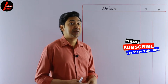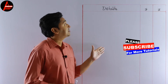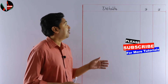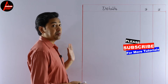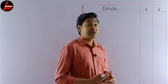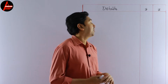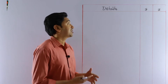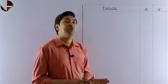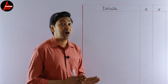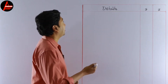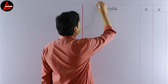We will include all the expenses and incomes of the partnership business. This is a vertical format to prepare the Profit and Loss Appropriation Account. In a horizontal format, you write all expenses on the debit side and all incomes on the credit side. Here we are doing the vertical format, so first we include all the incomes, then we subtract all the expenses. Let us write: Profit and Loss Appropriation Account.